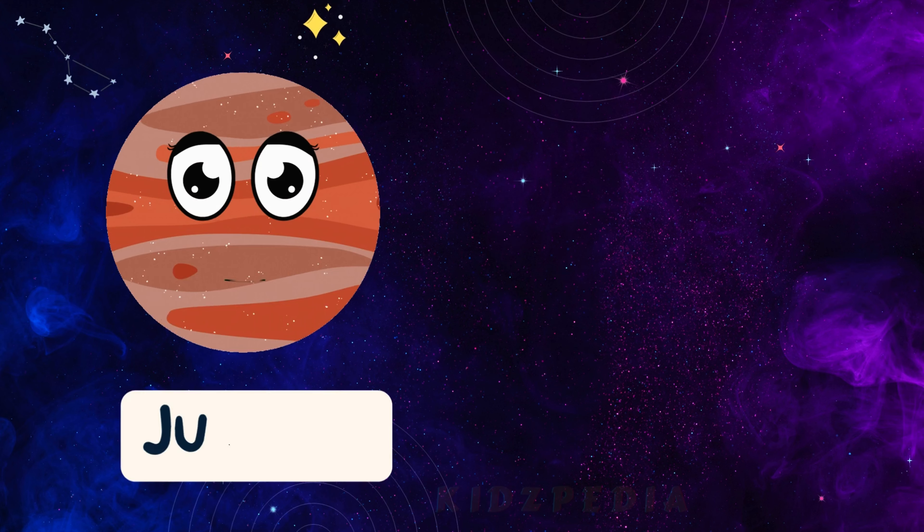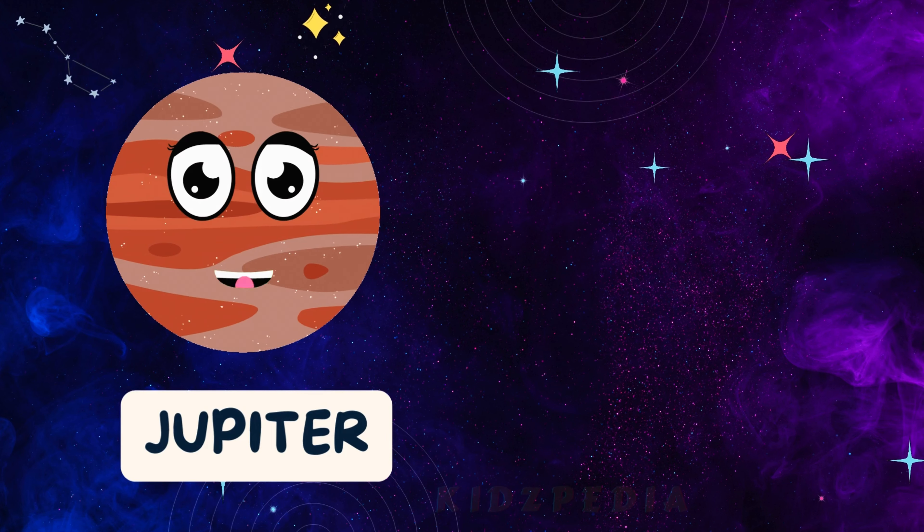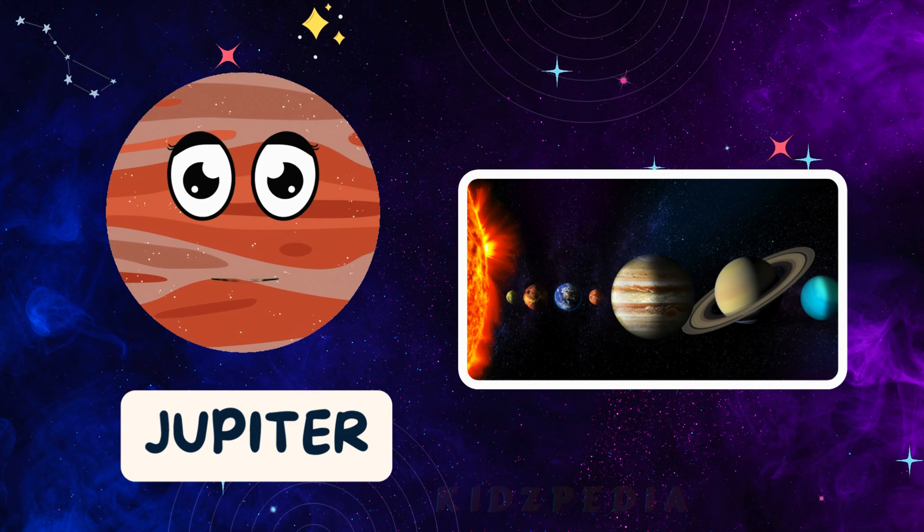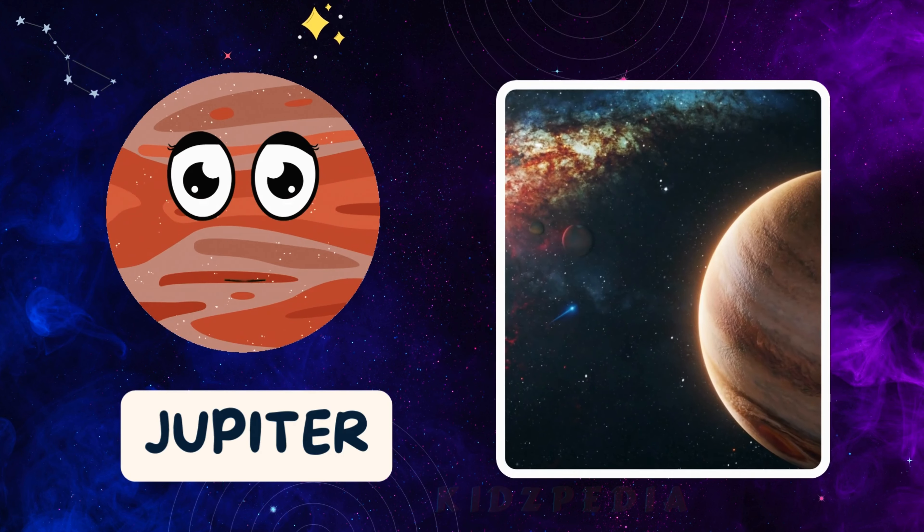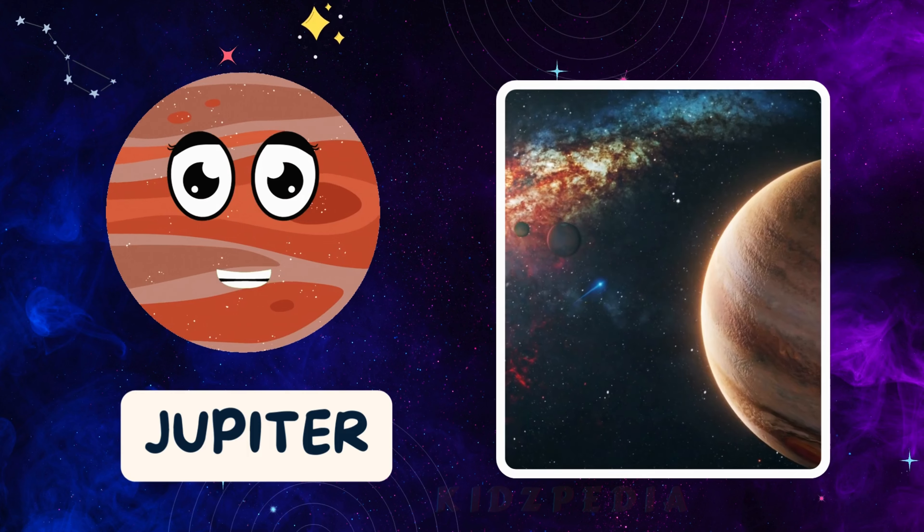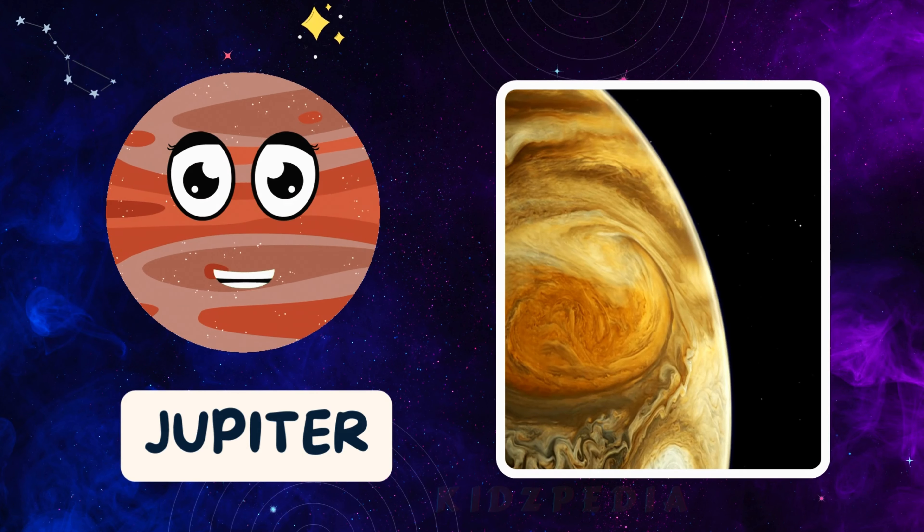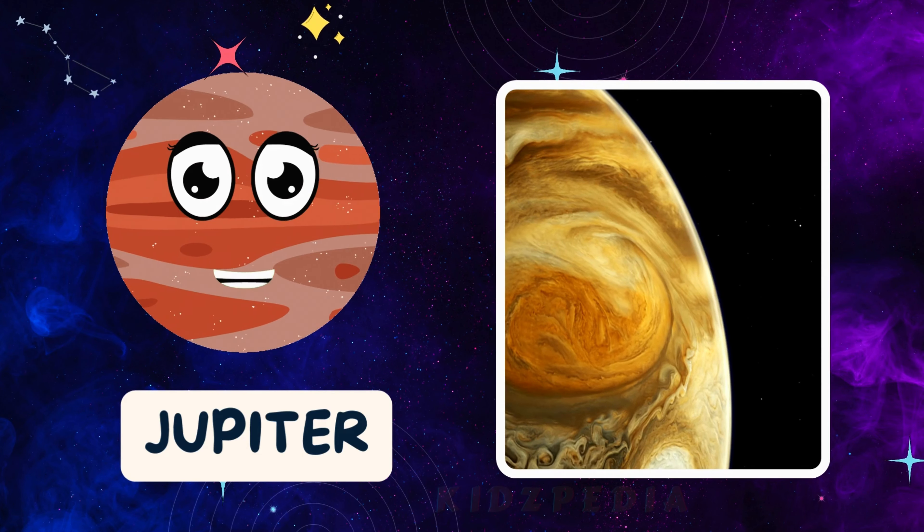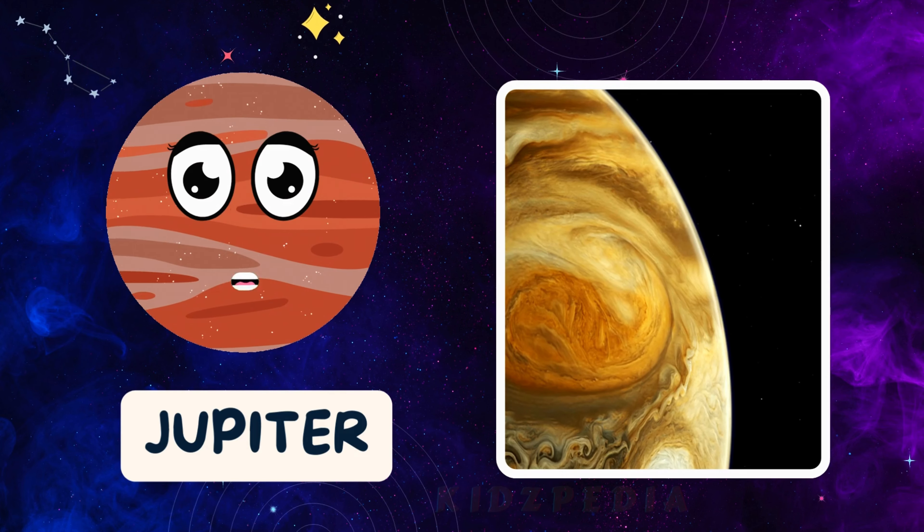Greetings. I'm Jupiter, the fifth planet from the sun and the largest planet in the solar system. I'm really big and have colorful stripes made of clouds. I also have a huge storm called the Great Red Spot that has been going on for hundreds of years.